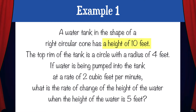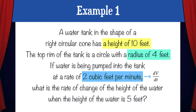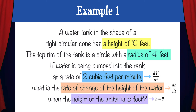The problem states that the cone has a height of 10 feet and a radius of 4 feet. Then it goes on to say that water is being pumped into the tank at a rate of 2 cubic feet per minute. We can call this dv/dt since it's a rate of change of volume. The problem asks us to find the rate of change of the height of the water — let's call this dh/dt — and we want to find this when the height of the water is 5 feet, in other words when h equals 5.